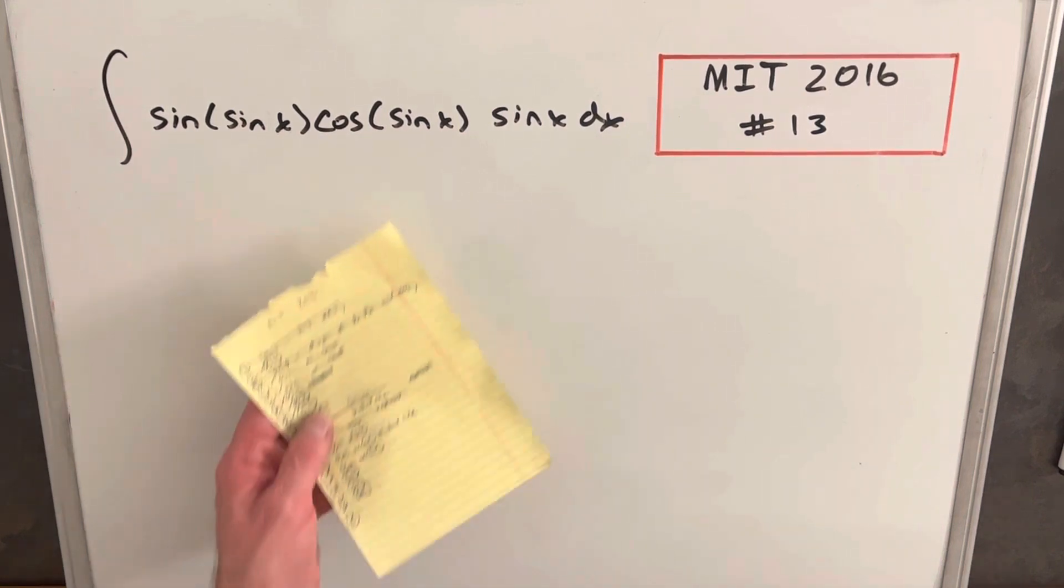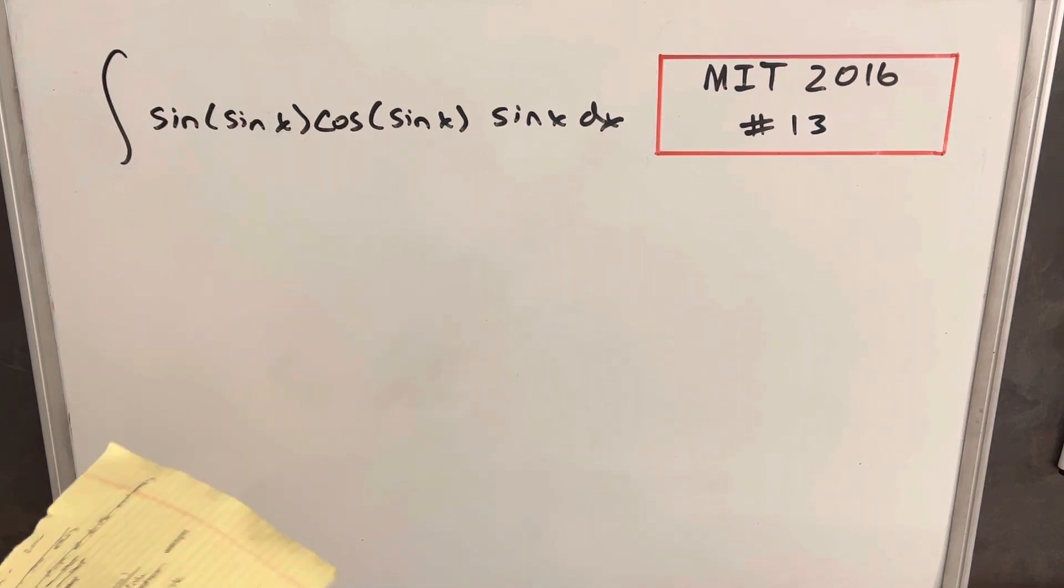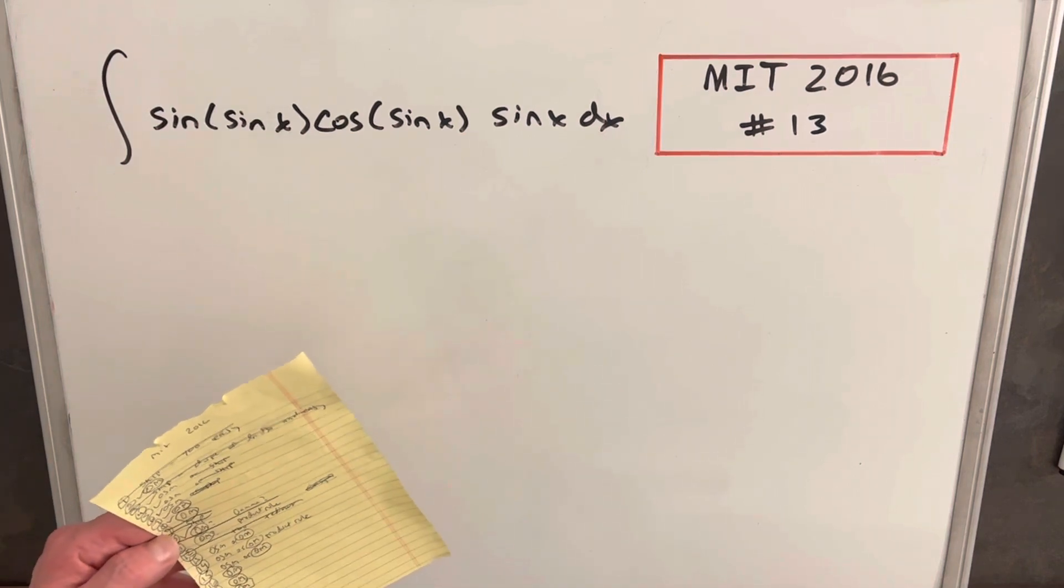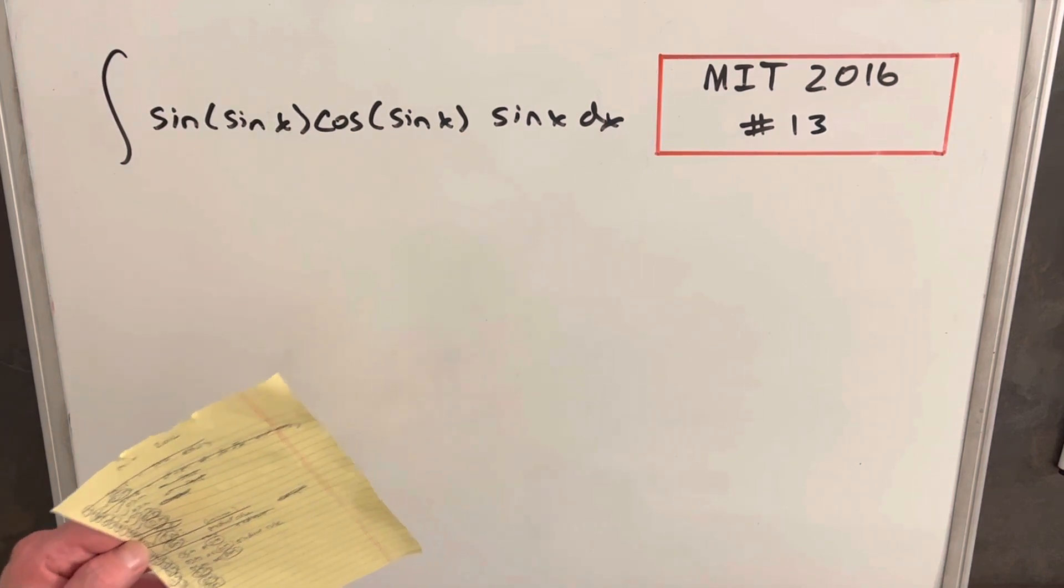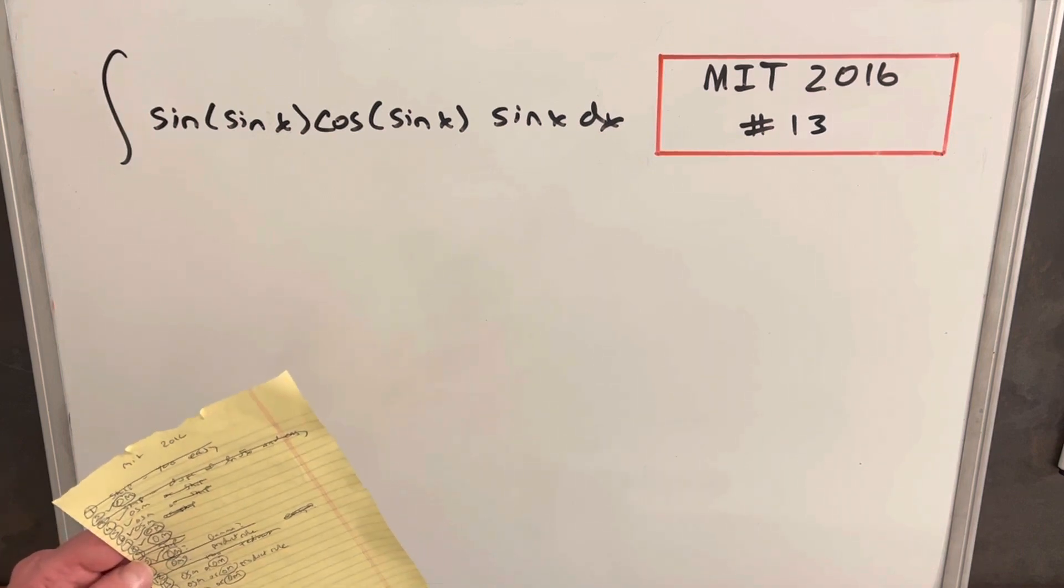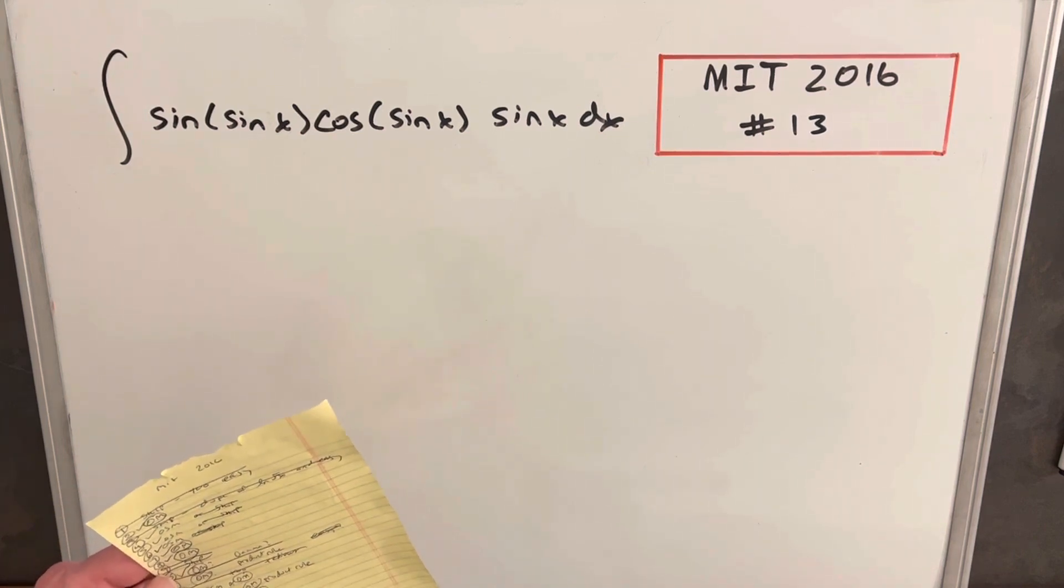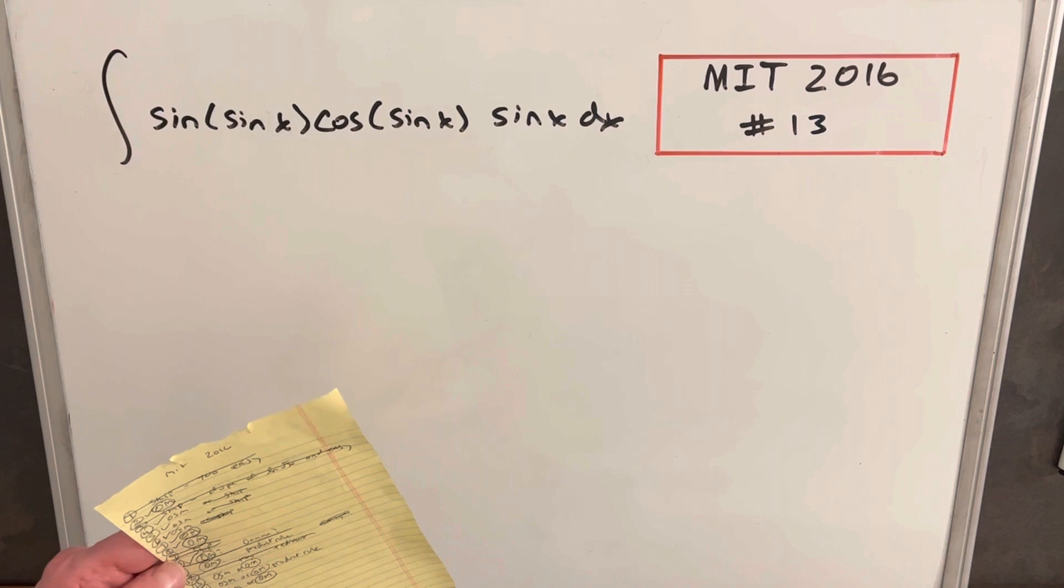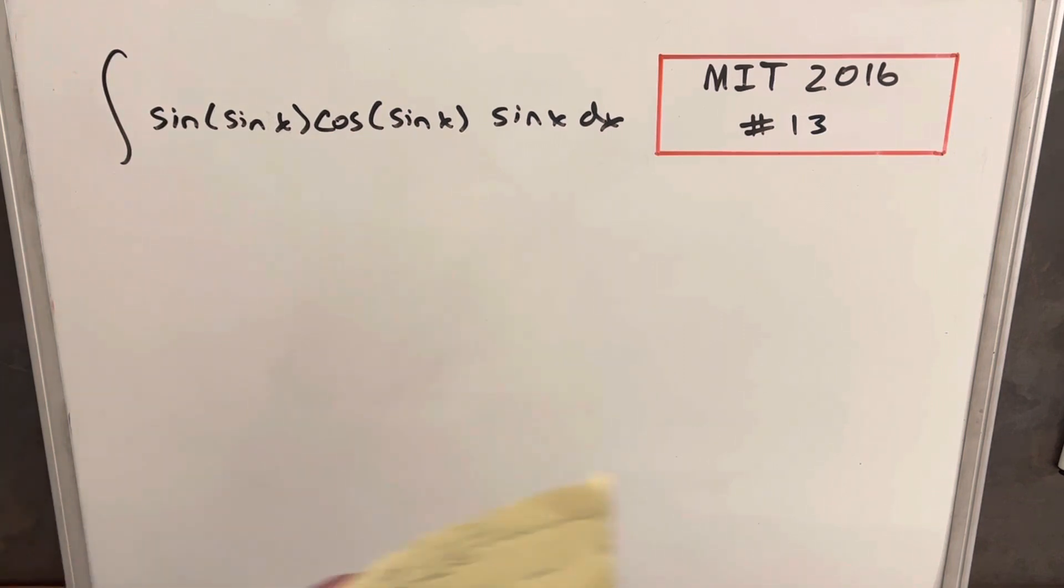Hey, I continue to work through my list of problems from the MIT Integration Bee for 2016. I'm on to problem 13. There's a good rhythm here between 11 and 18, they're all kind of moderate. I'm skipping 12 because it was just super tedious. I don't know why they had 12 on there, so I'm going to continue on with 13.